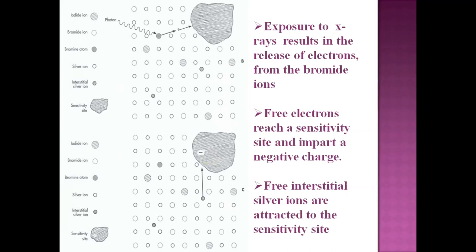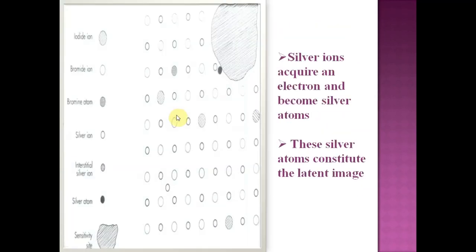The negatively charged site will attract positive ions. The free interstitial silver ions (Ag+) get attracted to this sensitive site. The silver ions acquire an electron and become silver atoms at this site. So the process is: bromide releases an electron, it goes to the sensitive site, becomes negative, attracts an Ag+ ion, and it becomes a silver atom.